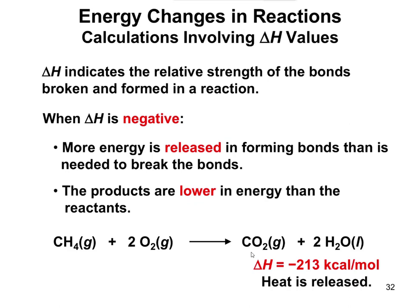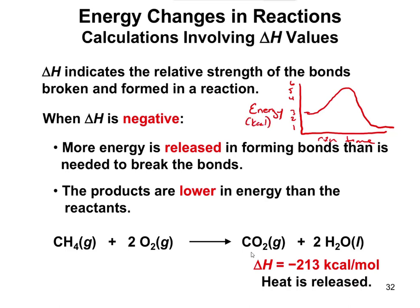I have a slide later on that talks about an energy diagram, but I'll go ahead and talk about it now. On the y-axis it's going to be energy, and on the x-axis we'll call it the reaction coordinate. We're going to start with our reactants here, the reaction occurs, it usually goes up and then comes down, and over here we have our products. Pretending energy is in kilocalories: the reactants are at 3 kilocalories and the products are at 1 kilocalorie.